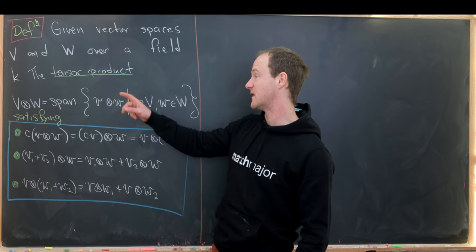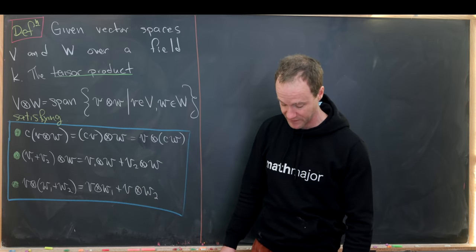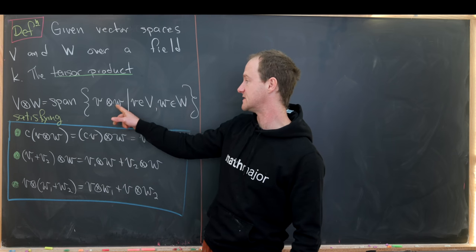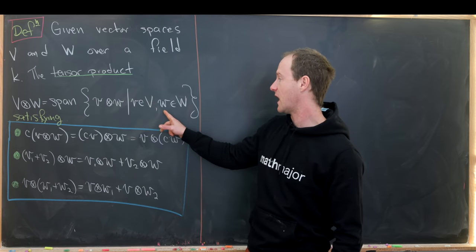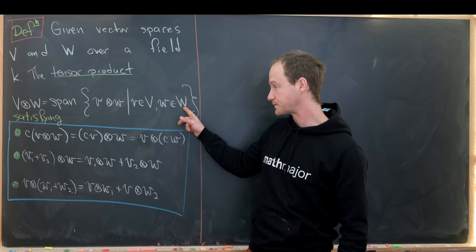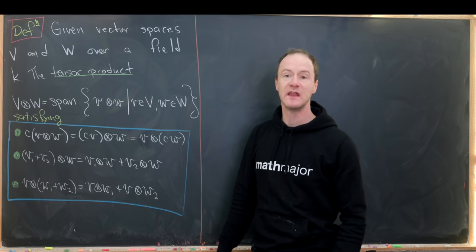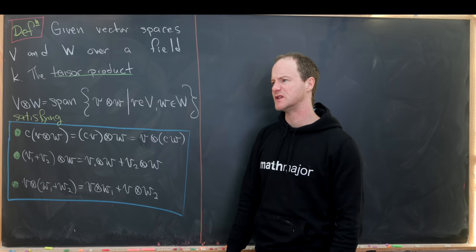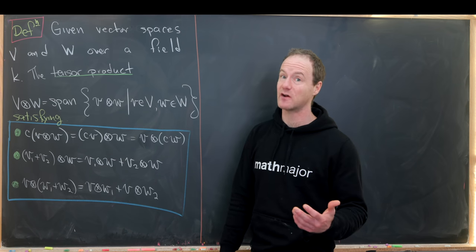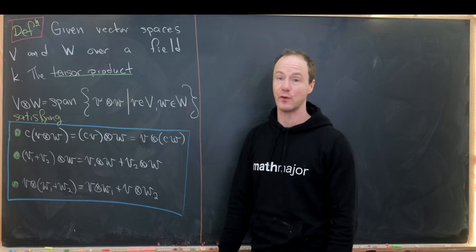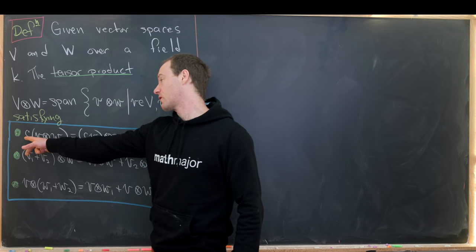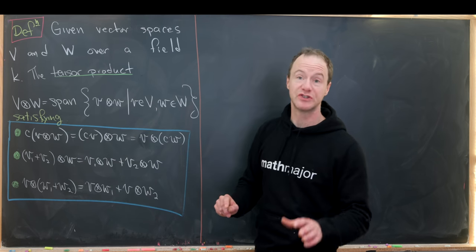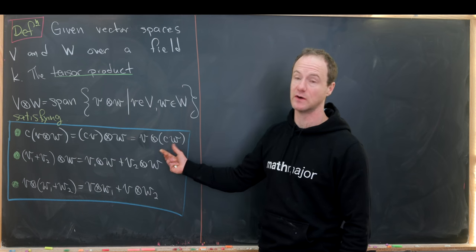The tensor product V⊗W is defined to be the span of all objects of the form v⊗w, where v is a vector from V and w is a vector from W. These satisfy the following rules, which came about by endowing relations onto the free vector space via a quotient. First, the scalar multiple c(v⊗w) is the same as (cv)⊗w, which is also the same as v⊗(cw).